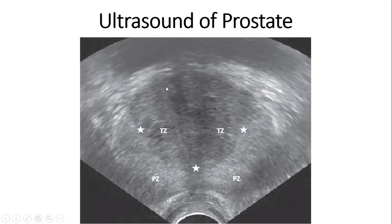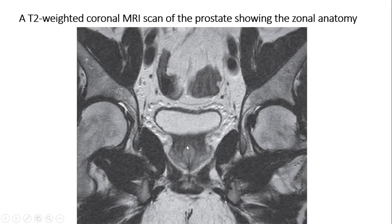This is an ultrasound of the normal prostate gland. In this axial view, the hyperechoic region is the peripheral zone and the hypoechoic region is the transition zone. Between the transition zone and the peripheral zone is the surgical capsule, shown by the stars. This is a T2-weighted coronal MRI scan of the prostate gland showing various zonal anatomy. The high signal intensity region is the peripheral zone. The low signal intensity region inside is the central zone and transition zone — since both are low signal intensity, they are together called the central gland. At the midline, a high signal intensity region corresponds to the verumontanum.